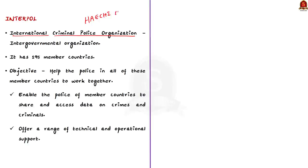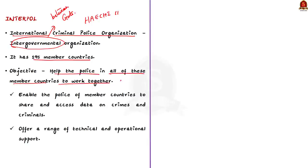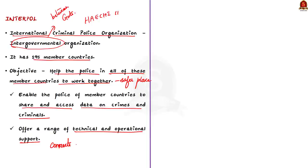What Interpol basically does is help the police in all member countries to work together to make the world a safer place. They enable the police of member countries to share and access data on crimes and criminals, and Interpol also offers a range of technical and operational support. So Interpol connects the member countries and helps the police share and access data on crimes and criminals, and in some cases offers technical and operational support.